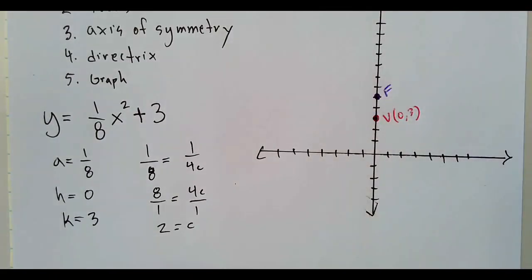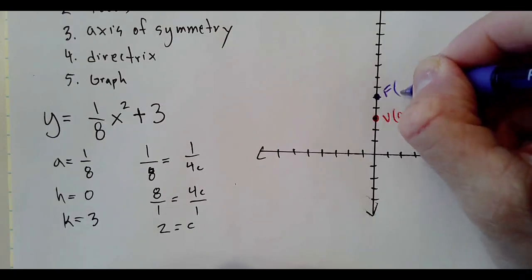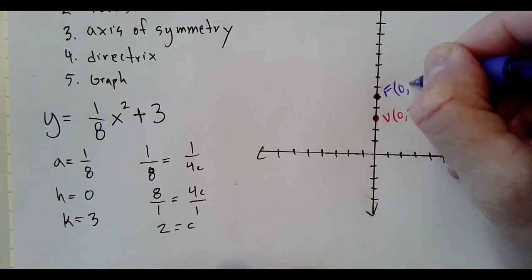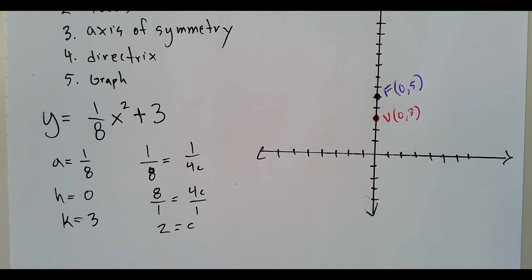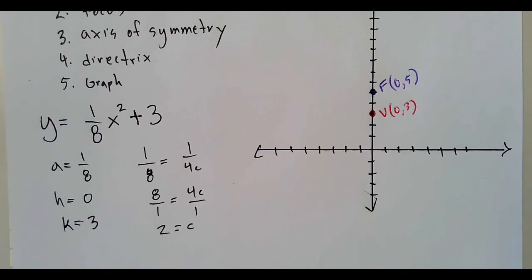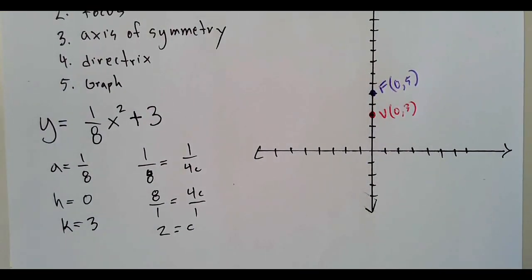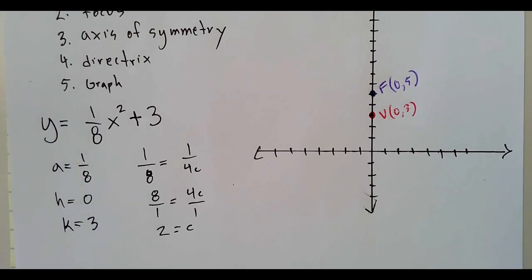The vertex, if we wanted to label it again, would be (0, 3), and the focus is going to be (0, 5) because we added that two, the distance from the vertex. So let's answer that question.